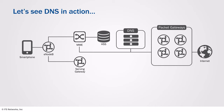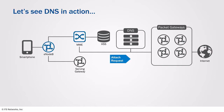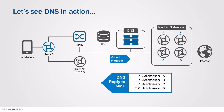Let's take a look at the connection flow when a subscriber initiates a data connection through the network. As the connection is set up, DNS resolves the IP address that should be used for the packet gateway. Since DNS is static, the DNS server will send a list of IP addresses to the MME in order to pick a gateway.